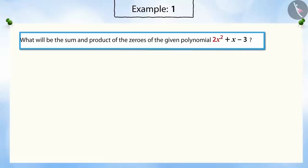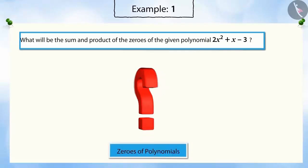What will be the sum and product of zeros of a given polynomial, 2x squared plus x minus 3?